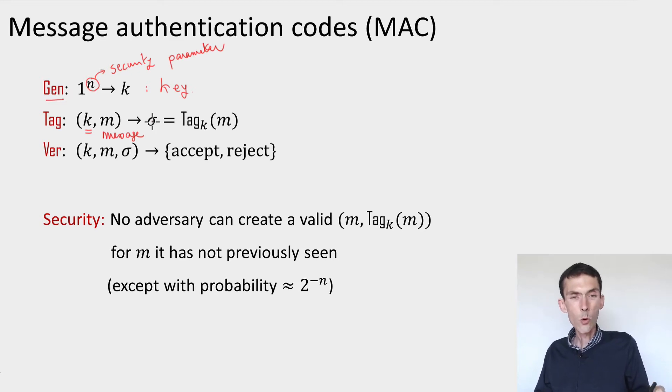And then the other procedure is a verification procedure. It takes as input the same key k, a message m, a purported tag for that message, and it outputs accept or reject. The idea being that if the tag is a valid tag, if sigma is tag_k of m, then it should accept. And if it is not, then it should reject. That's the correctness requirement for message authentication code.